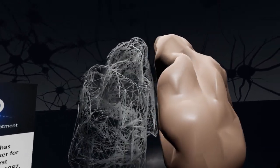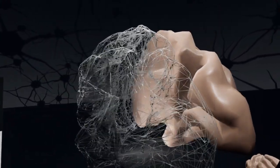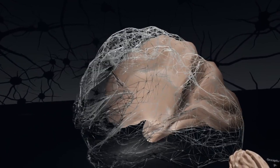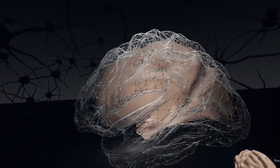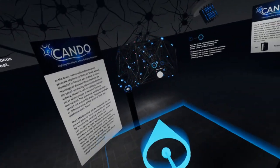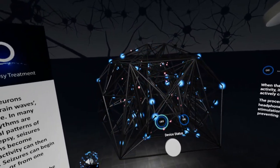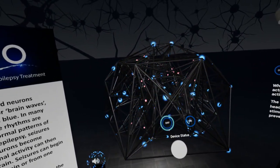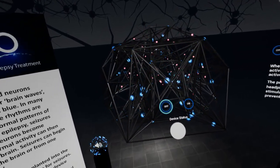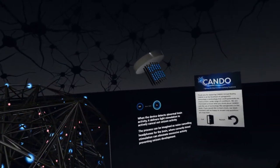Optogenetics uses naturally occurring light-sensitive proteins called opsins. These opsins are introduced into brain cells using vectors. Vectors are viruses that have been altered to make them safe. These opsins allow scientists a greater level of control than was previously possible.